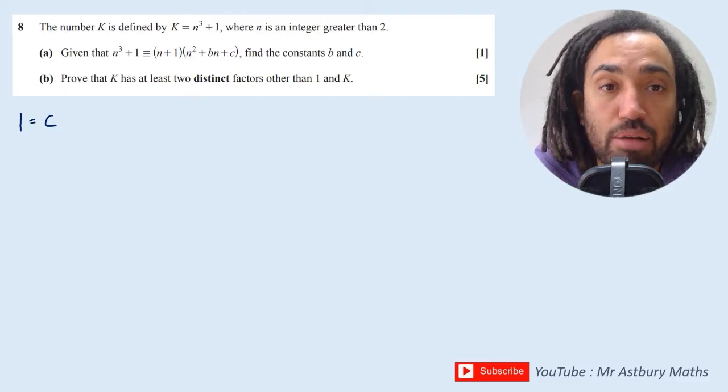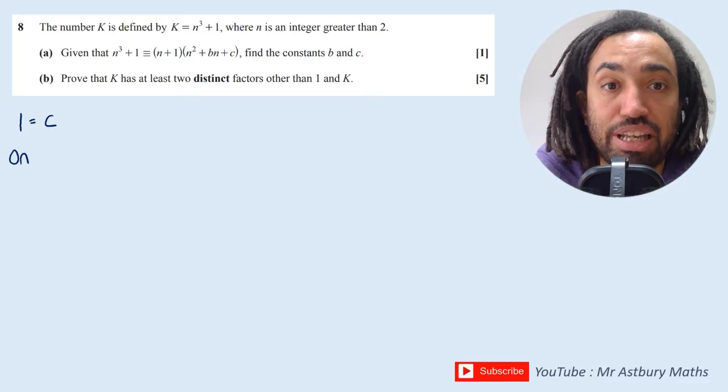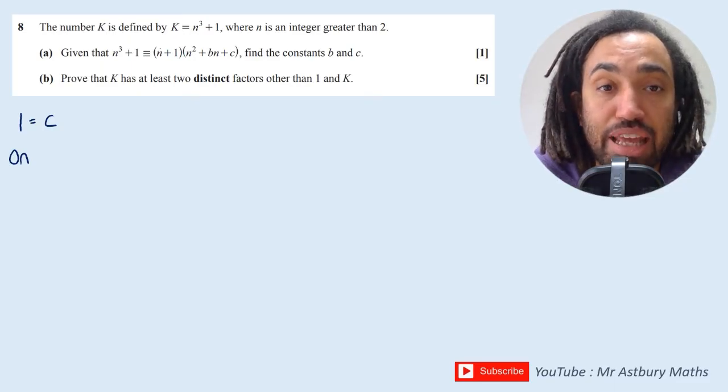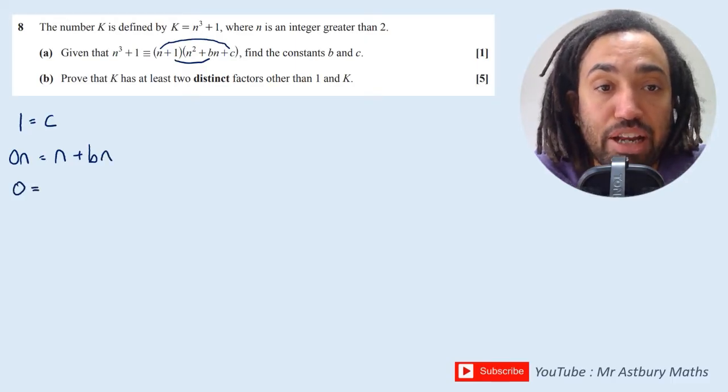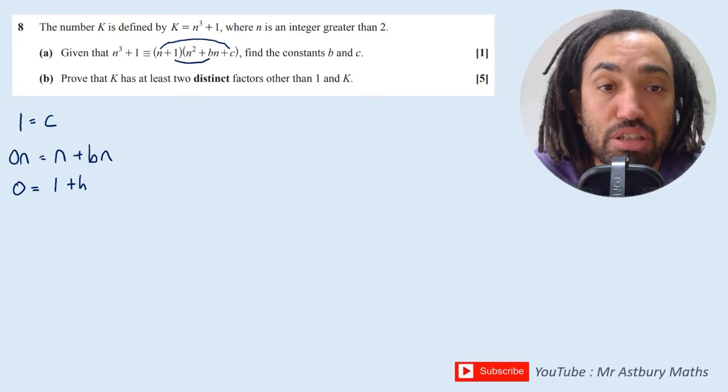I can next look at the n terms. There are no n terms on the left and the n terms from the right would come by doing n multiplied by c and also n multiplied by 1 multiplied by bn. So dividing through by n I'm going to get 0 = 1 + b, so therefore b = -1.